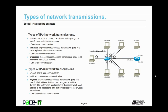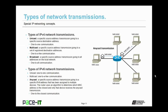Now let's move on to types of IPv6 network transmissions. IPv6 uses unicast and multicast, just like IPv4. Where IPv6 differs is with anycast transmission. Anycast is where a specific source address transmission is going to a specific IPv6 address that has been assigned to multiple devices. The router uses an algorithm to determine which device with that specially configured IPv6 address is closest, and only that device receives the anycast transmission. Anycast can be considered one-to-closest communication.